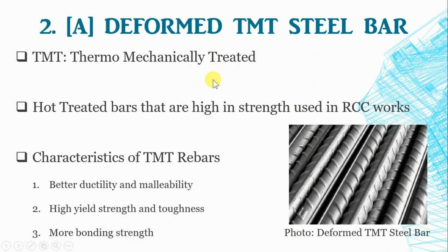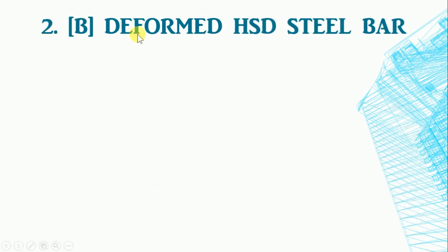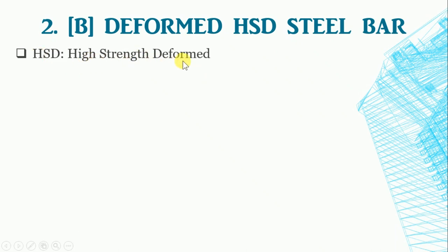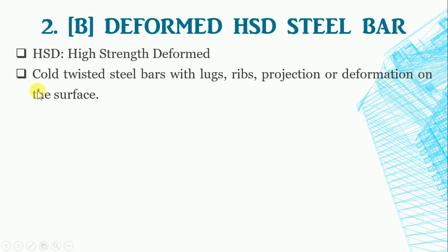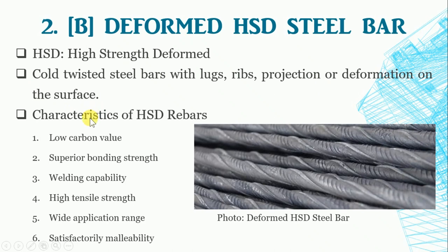Another type of deformed steel rebar is the Deformed HST steel bar. The high strength deformed bars are cold twisted, with steel bars having lugs, ribs, and projections or deformations on the surface. It is extensively used for reinforcement purposes in construction. These bars are produced in sizes from 4 mm to 50 mm in diameter. These types of bars have low carbon value, superior bonding strength, welding capability, high tensile strength, wide application range, and satisfactory malleability.